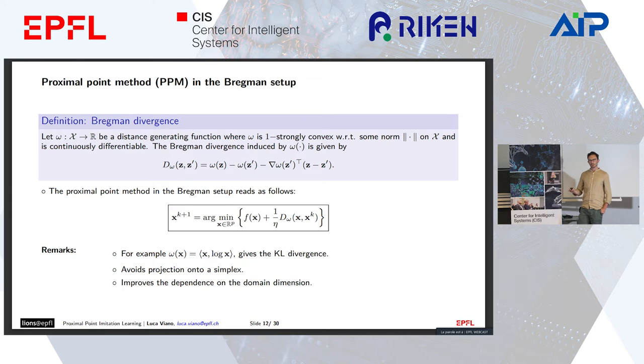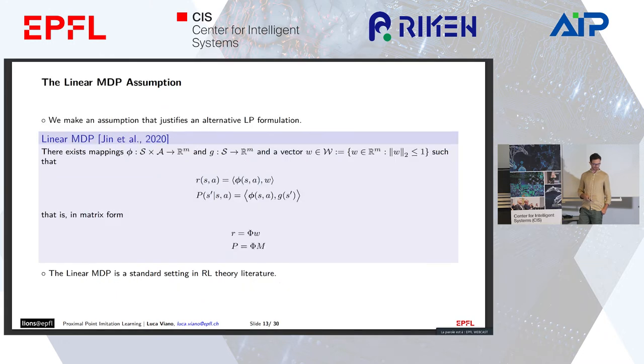Since the occupancy measure lies in the probability simplex, we'll use proximal point in the Bregman setup because we can avoid projecting back to the simplex if we choose the Bregman divergence to be the KL. The interesting feature is that when it can be implemented exactly, we can get arbitrarily fast rates by making the step size eta very big. But when we implement it inexactly, we'll have some trade-off on the step size.